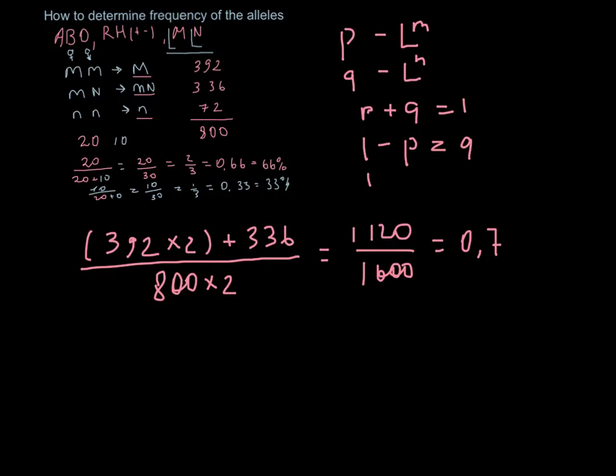1 minus p equals q. And as long as we know that p is 0.7, that means that q is 0.3.